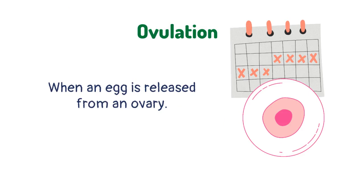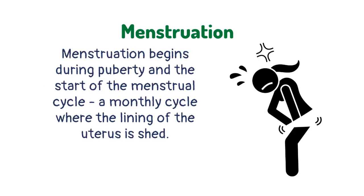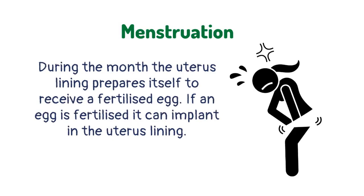Ovulation is when an egg is released from an ovary. Menstruation is the breakdown and loss of the lining of the uterus. Menstruation begins during puberty and the start of the menstrual cycle — a monthly cycle where the lining of the uterus is shed.